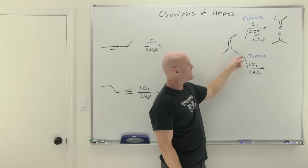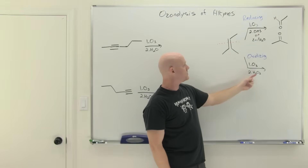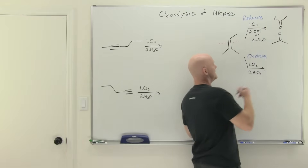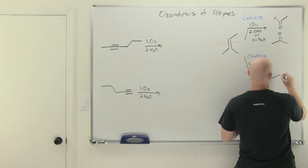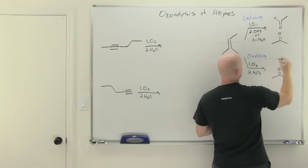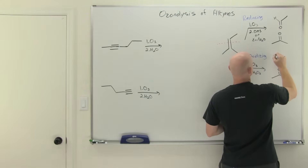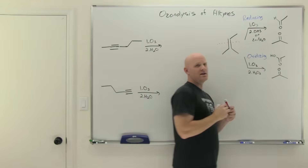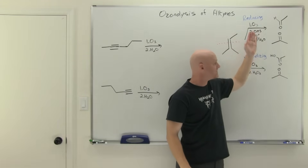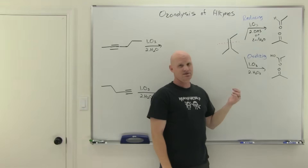We also have the option with alkenes of doing this under oxidizing conditions, where in step two we use a mild oxidizing agent — hydrogen peroxide — instead. The only difference is that a ketone is still a ketone no matter what, so we still get that product. But aldehydes are oxidizable to carboxylic acids, so under oxidizing conditions, any aldehydes you might have produced end up as carboxylic acids.